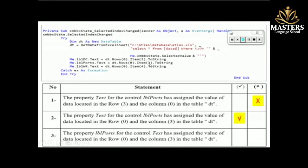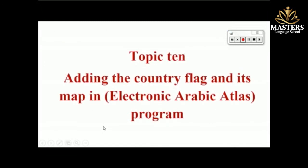The correct answer is that lbl_ports is assigned the value at row zero and column three from variable DT. However, one of the answer options incorrectly called 'lbl_ports' a tool (control) rather than a property — that answer is wrong because of that mislabeling. We stop here.